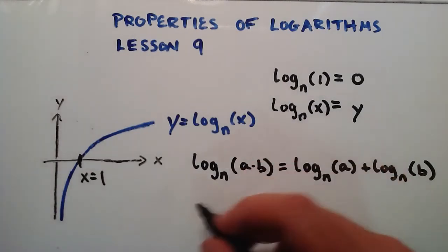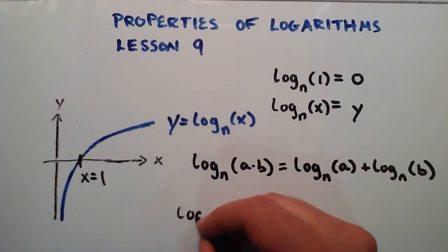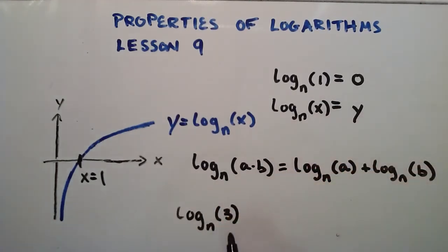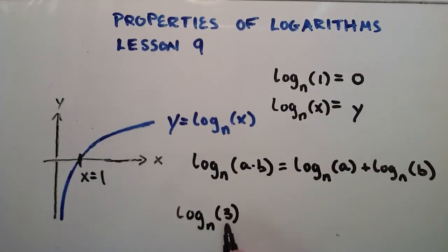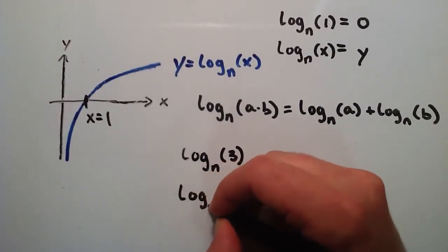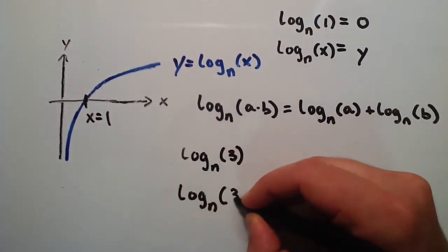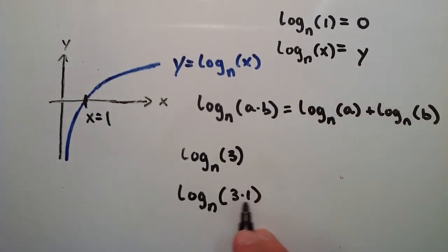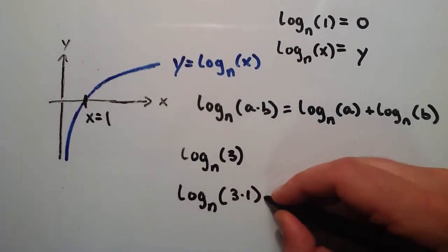So for instance, we have, let's say we have log base n of 3. 3 is the same thing as 3 times 1. So we could rewrite this as log base n of 3 times 1, since 3 times 1 equals 3. And now we have our a and our b here. Our a is 3, our b is 1.